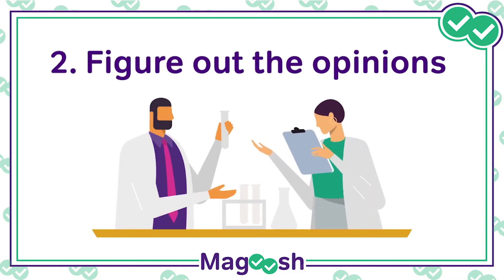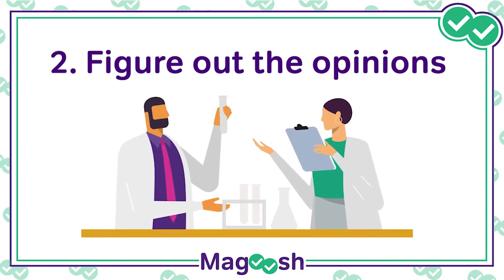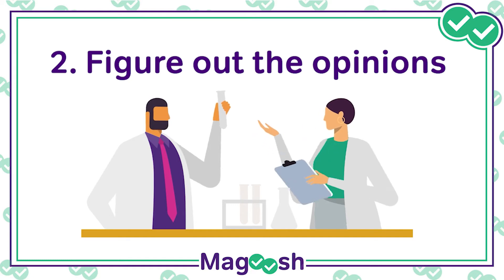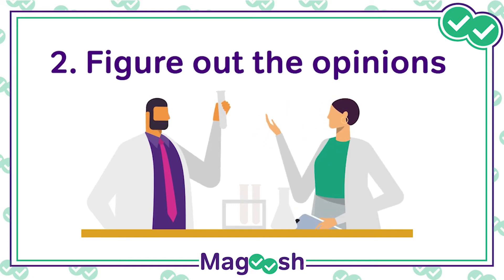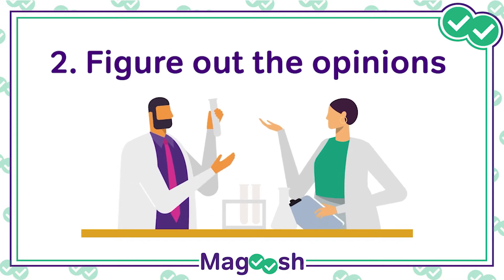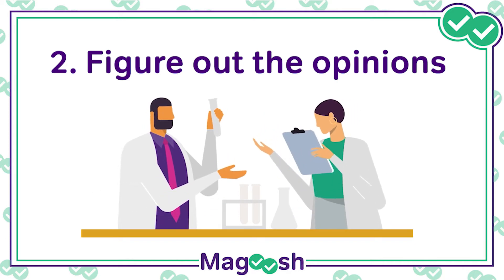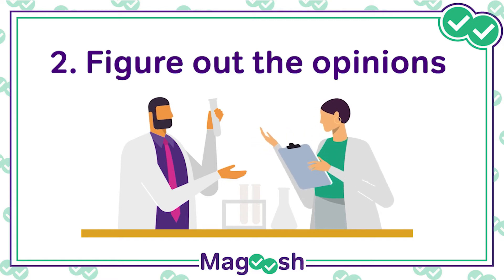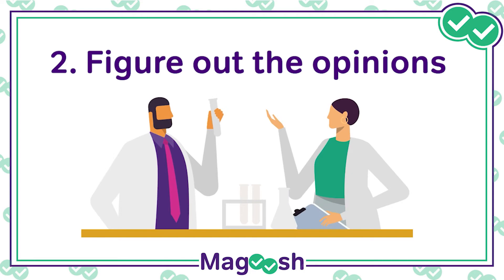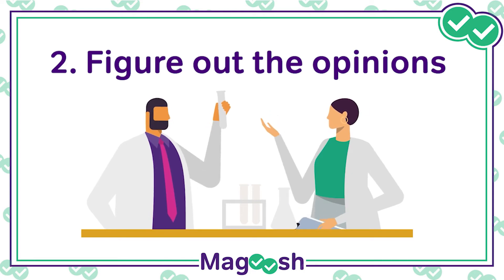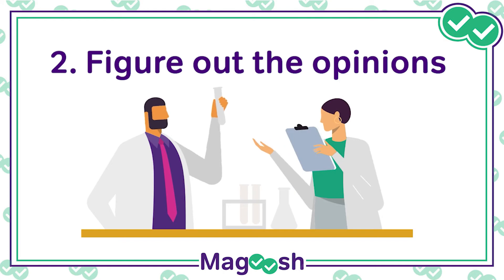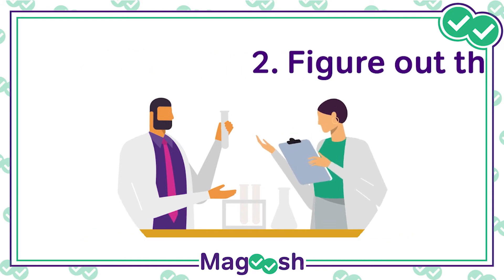Tip 2: Figure out the opinions. Each student or scientist will have a basic theory in regards to the phenomenon. This opinion can usually be found in the first sentence underneath the person's name. Try and put yourself in each scientist's shoes. How are the basic theories different? How are they similar, if at all? Underline this information so you can easily reference it later. You could even jot down a quick summary of each scientist's viewpoint so you don't forget.